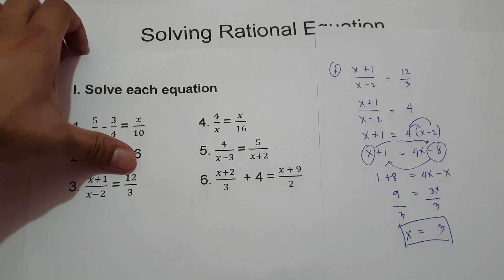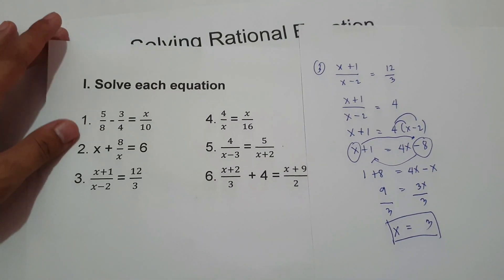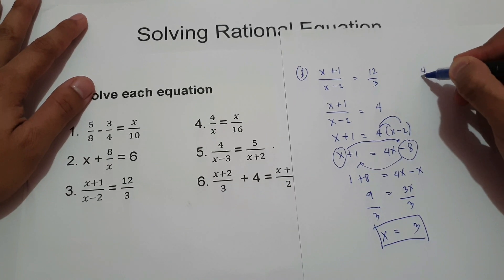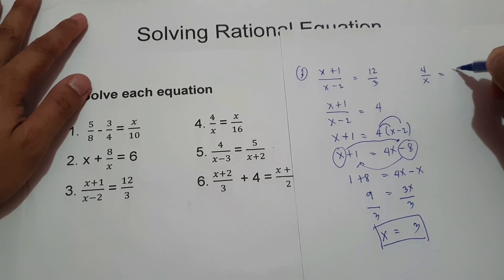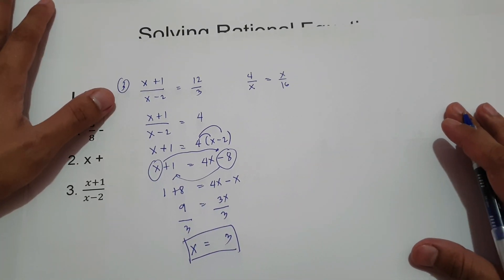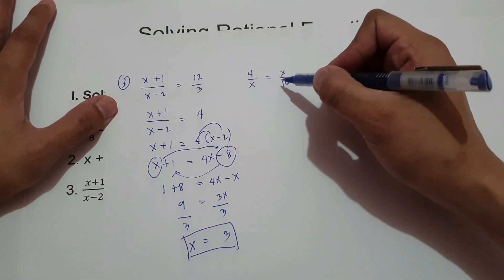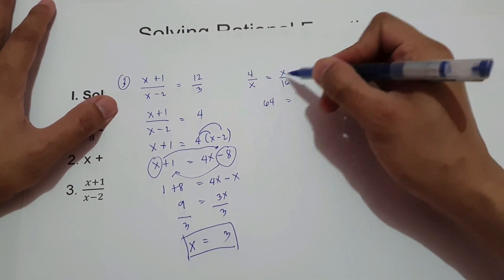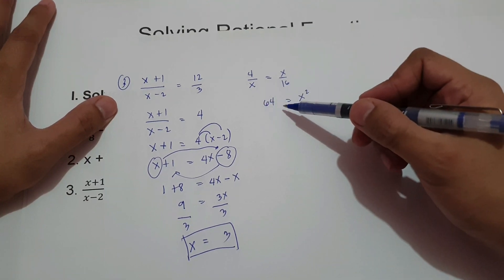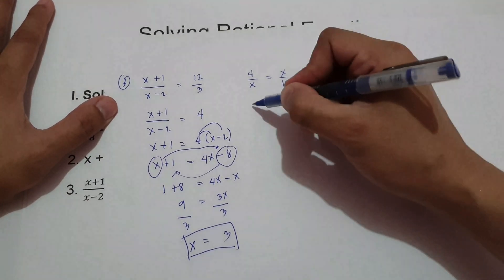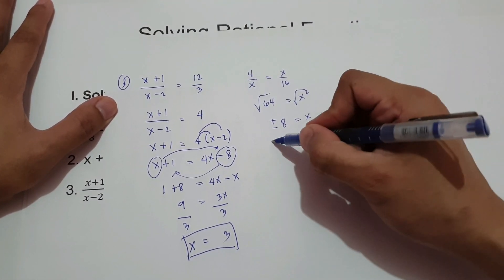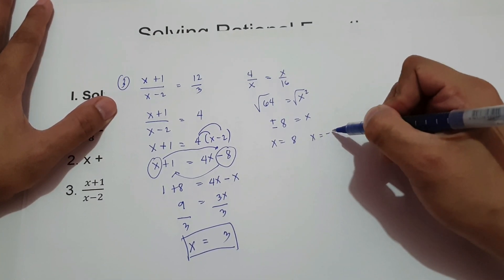On example number 4, we have 4 over x equals x over 16. We simply cross multiply: 4 multiplied by 16 is 64, and x multiplied by x is x squared. So we have x squared equals 64. You can take the square root of both sides to find x. The square root of 64 is positive or negative 8. So x is 8 and x is negative 8.